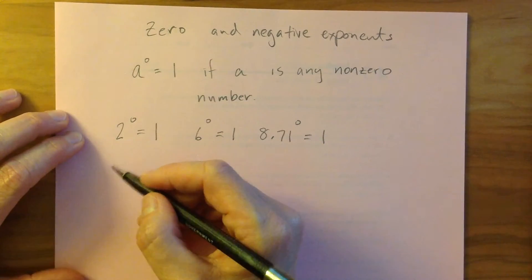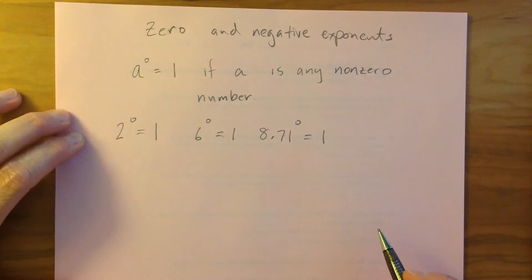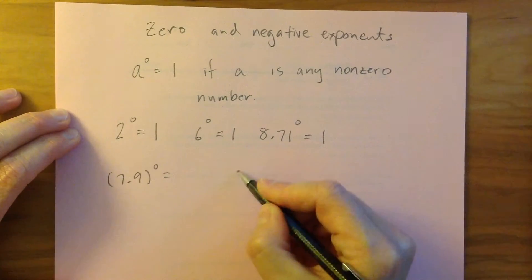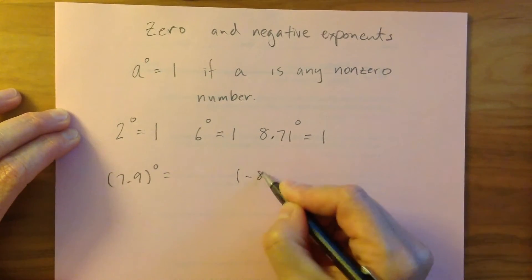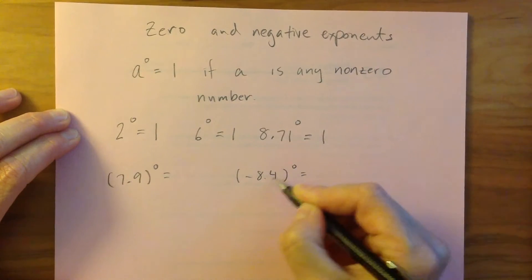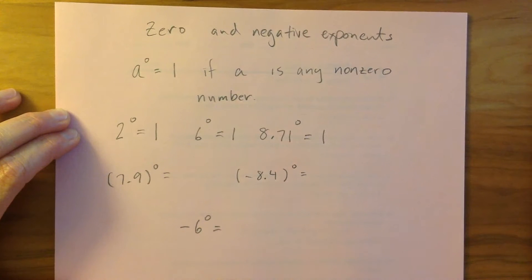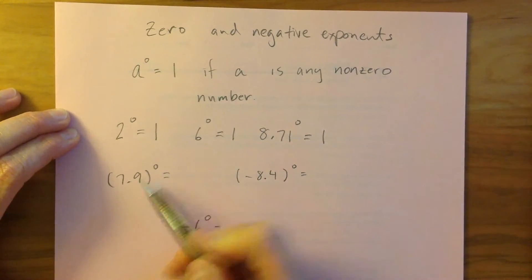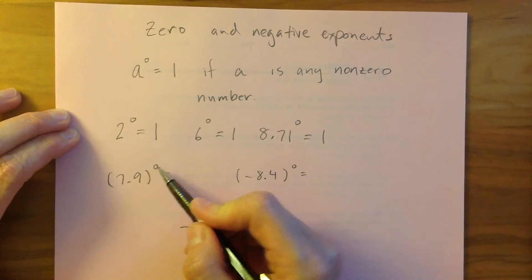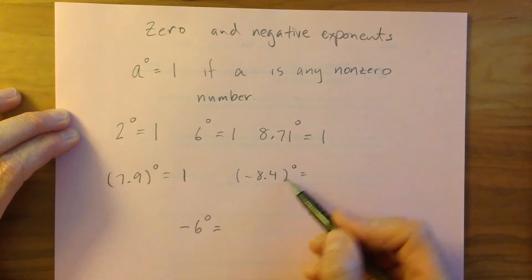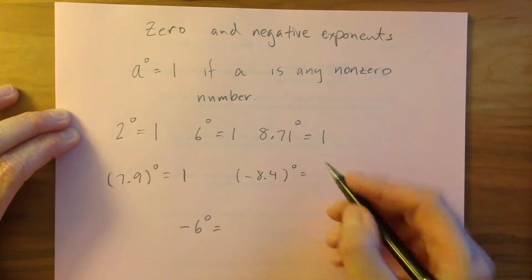Press pause and work on the three examples I'm going to put up. So 7.9 — that's not equal to zero, so this is a non-zero number being raised to the power of zero, so that's going to be equal to one. Likewise, negative 8.4 doesn't equal zero, and so when I raise it to the power of zero, I get one.